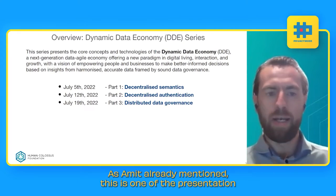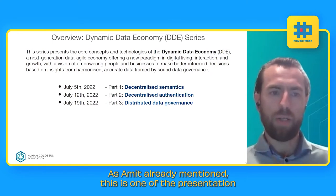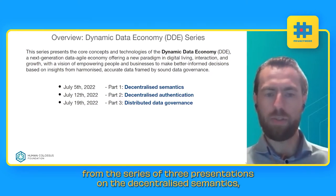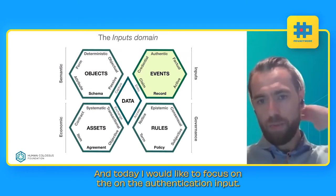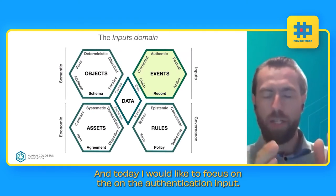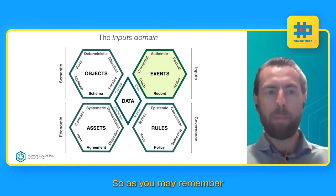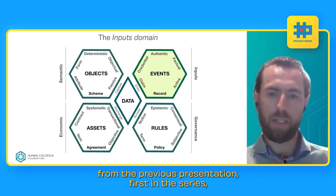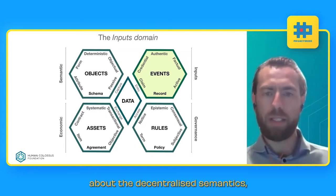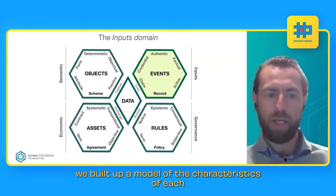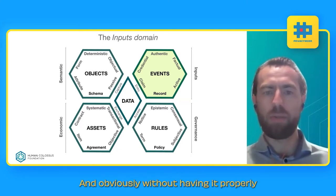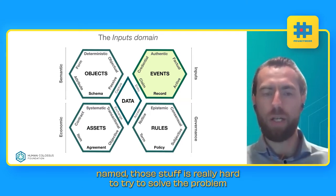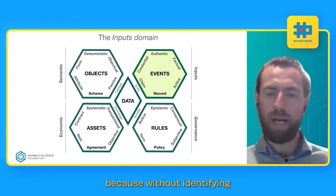With that experience I'd like to provide insights into the Dynamic Data Economy at the level of decentralized authentication. As already mentioned, this is one presentation from a series of three on decentralized semantic authentication and distributed data governance. Today we focus on the authentication input. As you may remember from the first series on semantics, we built a model of the characteristics of each corresponding domain, trying to explain what we're dealing with — because without properly naming things, it's really hard to try to solve the problem.